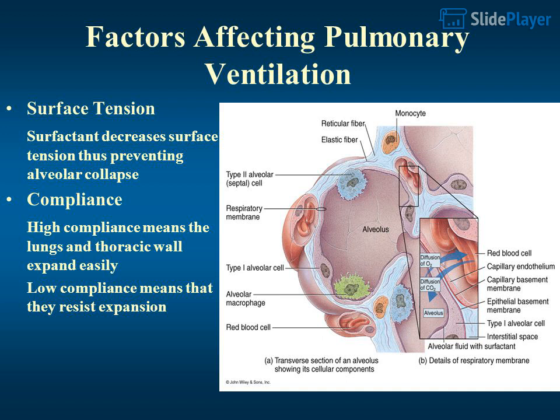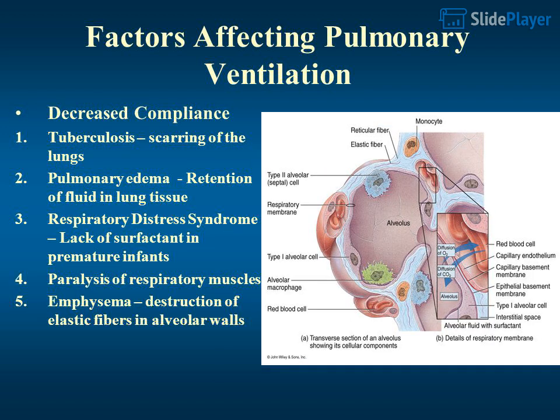Factors affecting pulmonary ventilation: surfactant decreases surface tension, thus preventing alveolar collapse. Compliance — high compliance means the lungs and thoracic wall expand easily; low compliance means they resist expansion. Conditions causing decreased compliance include tuberculosis, scarring of the lungs, pulmonary edema, respiratory distress syndrome due to lack of surfactant in premature infants, paralysis of respiratory muscles, and emphysema, which involves destruction of elastic fibers in alveolar walls.